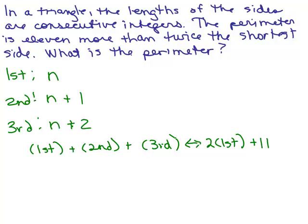The first side is N. The second side is N plus 1, and the third side is N plus 2. Some people like to put each of these in parentheses, that's okay, but then you would take them off at the next step.